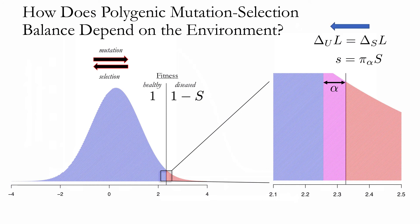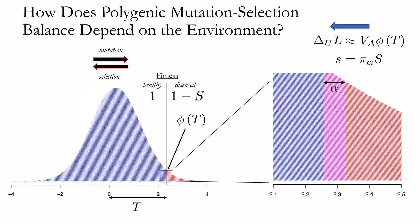This means we're now out of equilibrium, with the selection response outweighing the mutational pressure, and there's going to be an evolutionary response to restore mutation selection balance. To understand this, we can rely on an approximation from quantitative genetics: the selection response equals the additive genetic variance for liability, VA, multiplied by the selection gradient beta — the derivative of log mean fitness with respect to mean liability. VA tells us about the population's capacity to respond to selection, whereas beta tells us about the strength of selection.